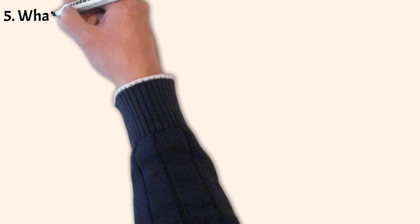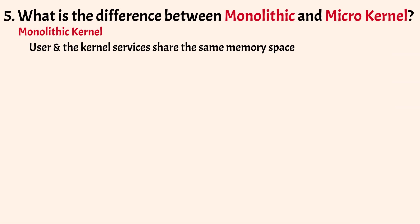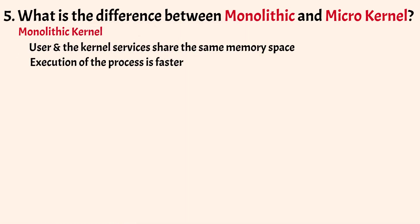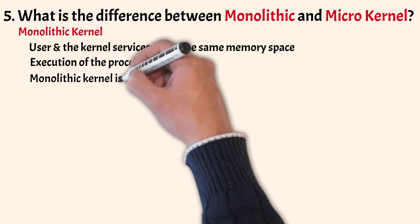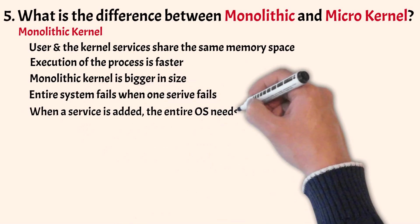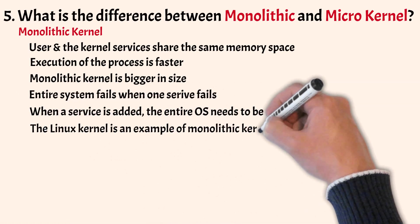What is the difference between monolithic and micro-kernel? In a monolithic kernel, user services and kernel services share the same memory space, making process execution faster. However, since there is no separate memory space for user and kernel, the size of the kernel increases, enlarging the overall OS. When any service fails it leads to an entire system failure, and when a new service is added the entire OS needs to be modified. The Linux kernel is an example of a monolithic kernel.